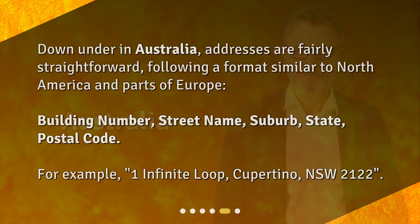Australia. Down under in Australia, addresses are fairly straightforward, following a format similar to North America and parts of Europe: building number, street name, suburb, state, postal code. For example, 1 Infinite Loop, Cupertino, NSW 2122.